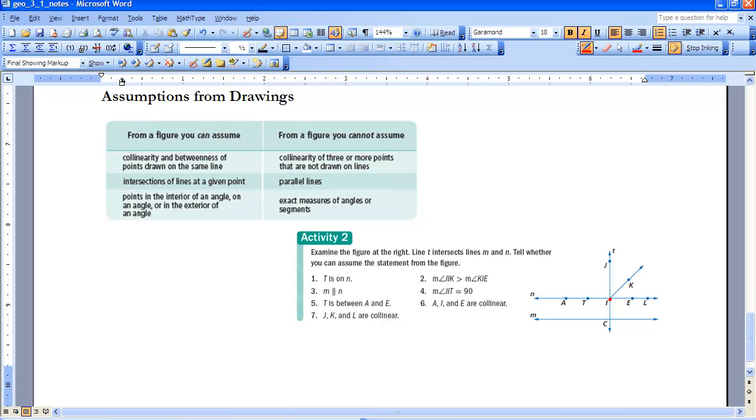The third thing you can assume is that points in the interior of an angle, on an angle, or in the exterior of an angle. So here, if you look at this angle, J, I, L. K, if we fill in that convex region, K is on the interior of that. And A is on the exterior of that. And then all the points that are part of that angle, J and I and E and L, those are all things that we can assume.